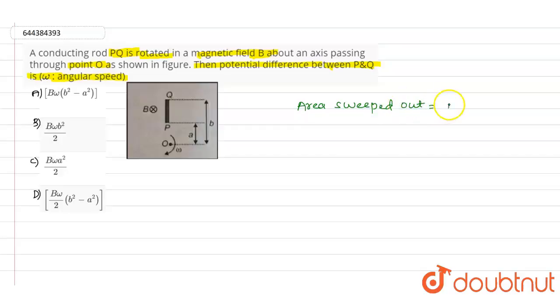Area swept is equals to pi into b squared minus a squared. And the magnetic flux phi value will be equals to B into pi into b squared minus a squared.